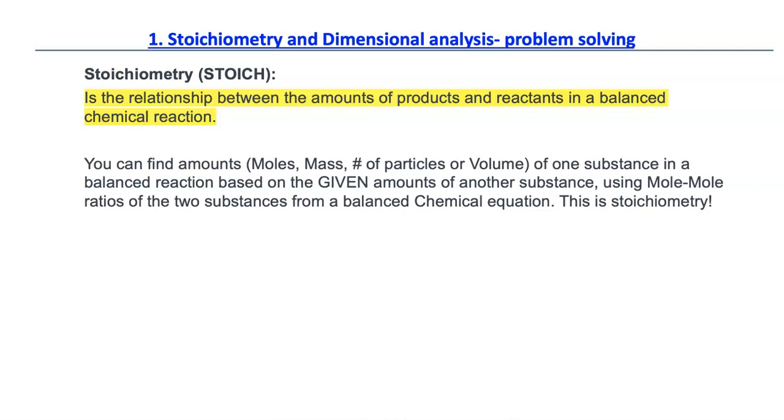But you use the mole to mole ratios of the two substances from the balanced chemical equations. Now it will become clear to you why I told you you need to learn how to balance equations for the next unit when we were doing unit 5. This process is called stoichiometry.